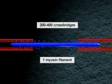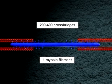There are approximately 200 to 400 cross bridges for any one myosin filament.